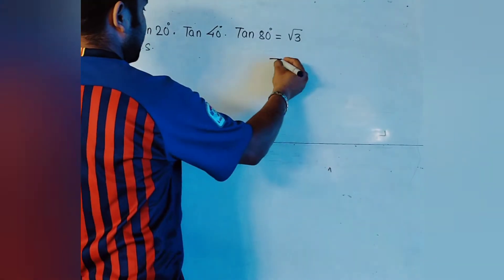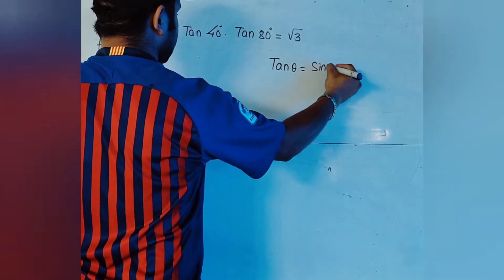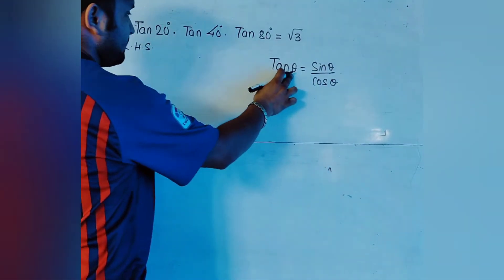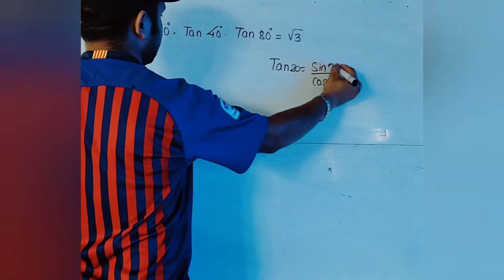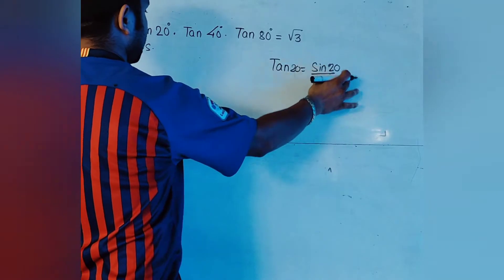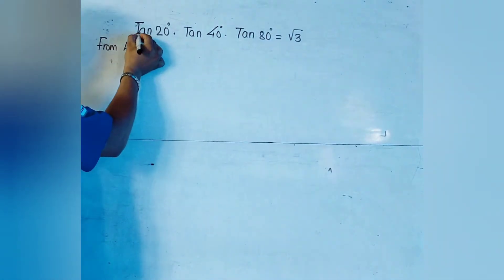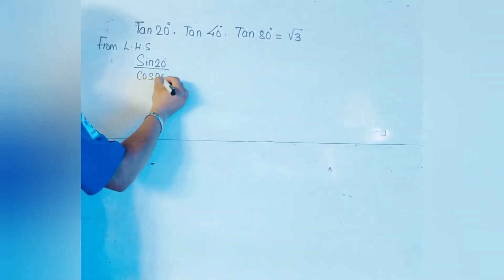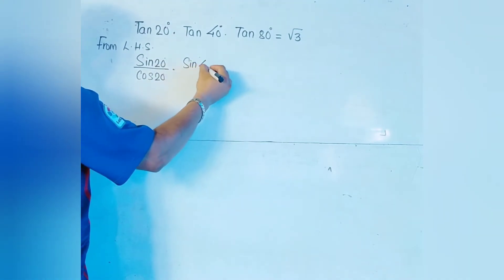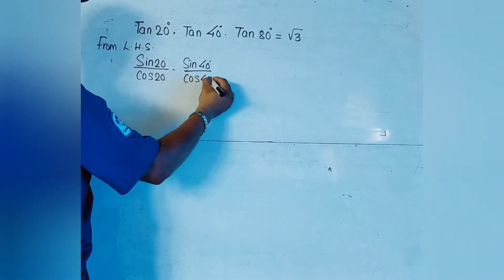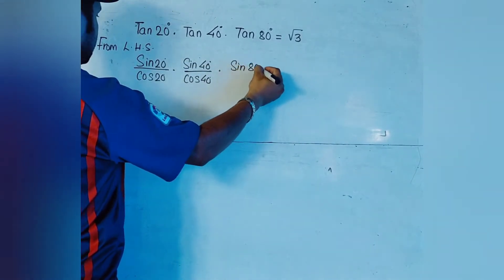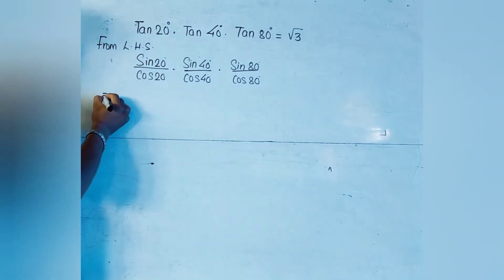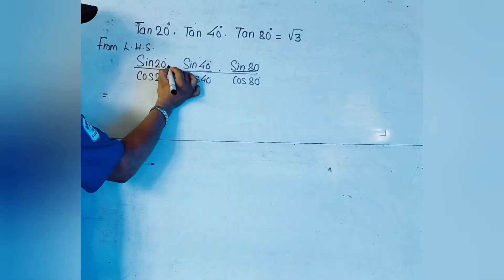We have to prove that tan20° × tan40° × tan80° equals √3. Before going to the problem, let us recall the formula: tan θ = sin θ / cos θ. So tan20° = sin20° / cos20°, tan40° = sin40° / cos40°, and tan80° = sin80° / cos80°.